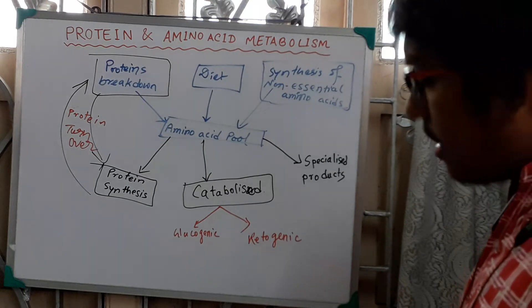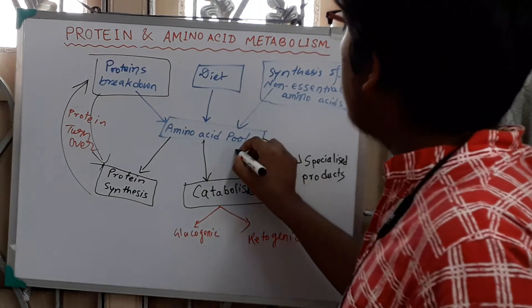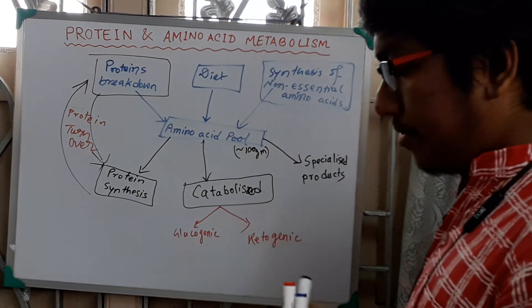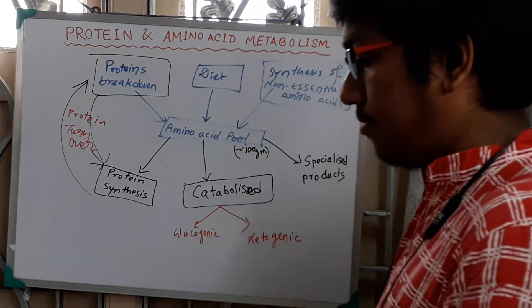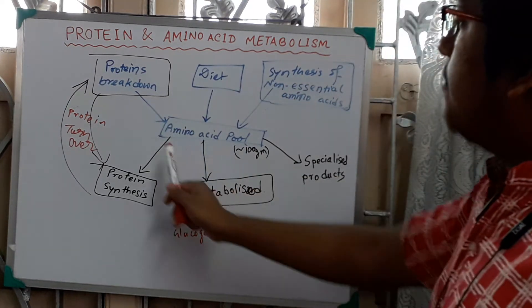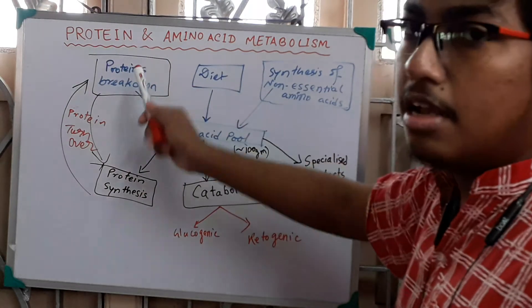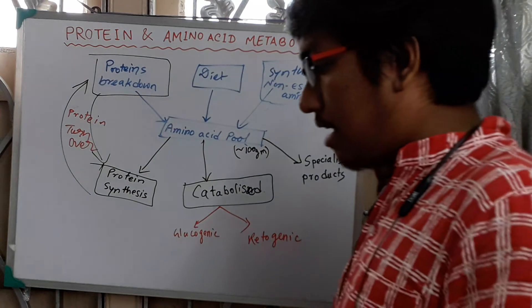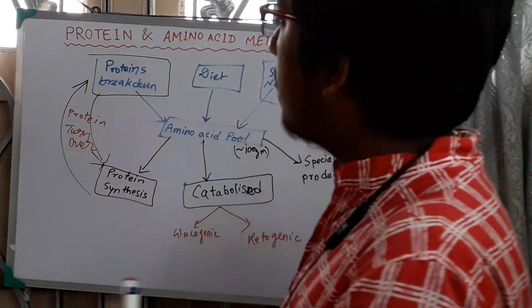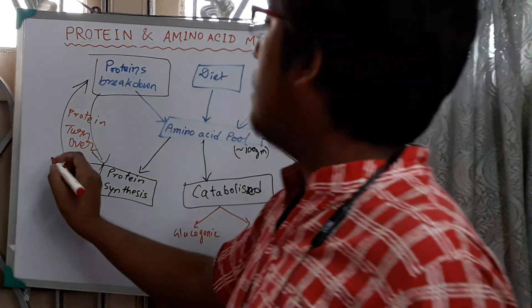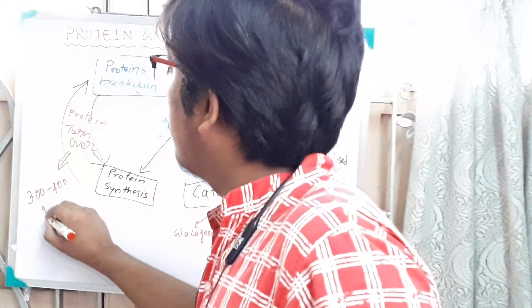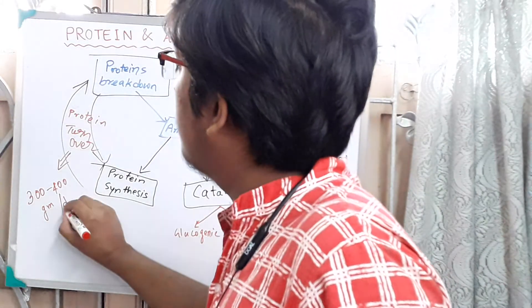The amino acid pool value is almost constant at 100 grams in our body. The protein turnover value — that is, the average protein breakdown — is approximately 300 to 400 grams daily in our body. This is the value of protein turnover, and this is very important to remember.